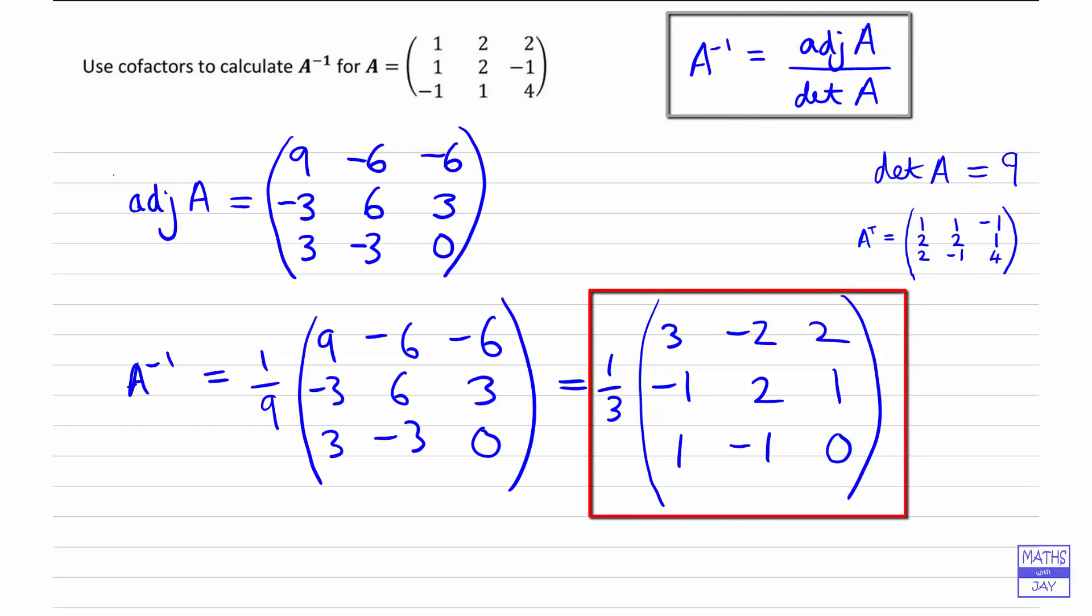You might like to check by working out the product of A and its inverse. You should find that you do get the identity matrix. Of course, you could do that the other way around, multiplying the inverse of A by A, and that should also give you the identity matrix.